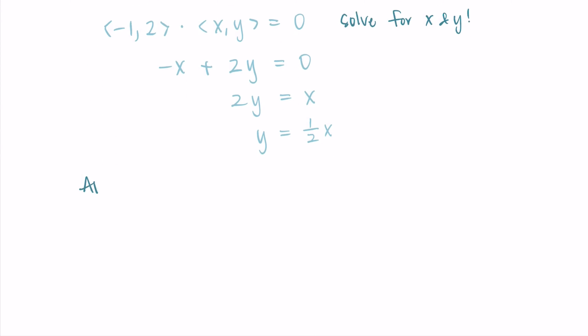So what this tells us is that any vector that has the form x, 1 half x, so I put that 1 half x in the y position, the y component, any vector with this form will be perpendicular to negative 1, 2.